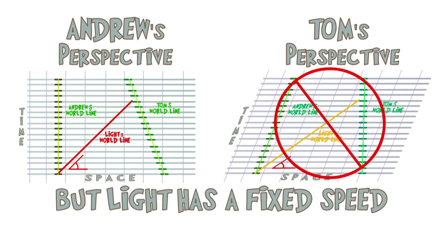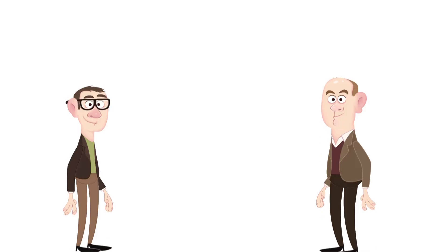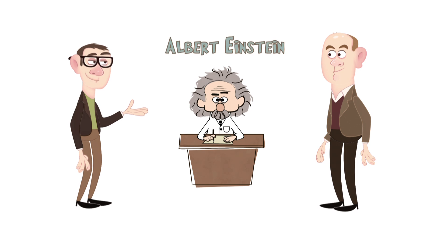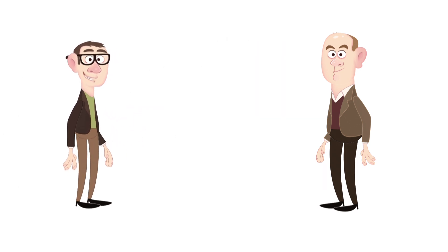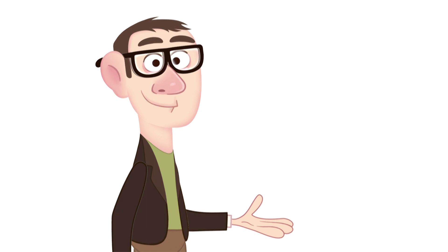But every experiment we've ever done, and we've tried very hard, says that everyone measures light to have a fixed speed. So let's start again. In the 1900s, a clever chap named Albert Einstein worked out how to see things properly from Tom's point of view while still getting the speed of light right.